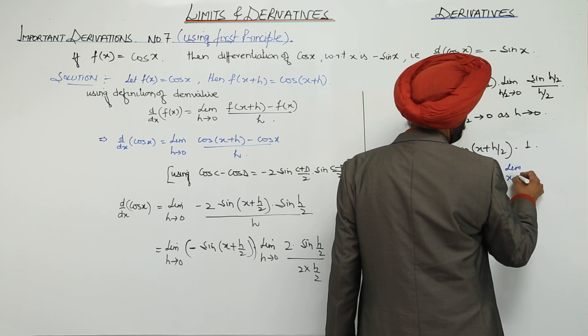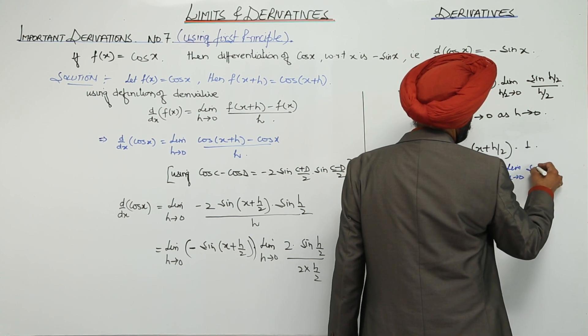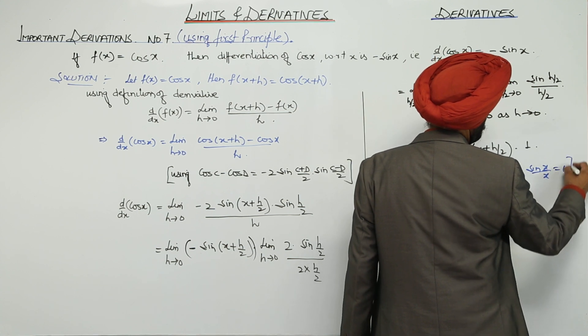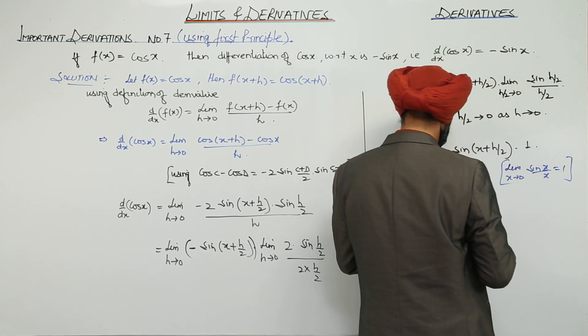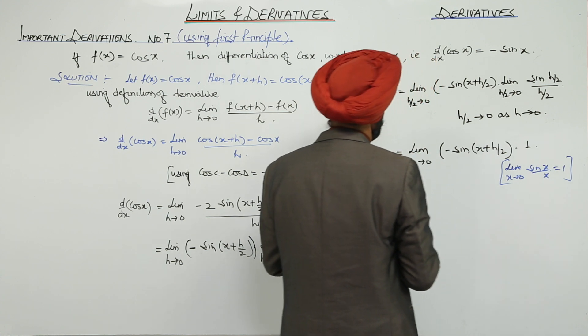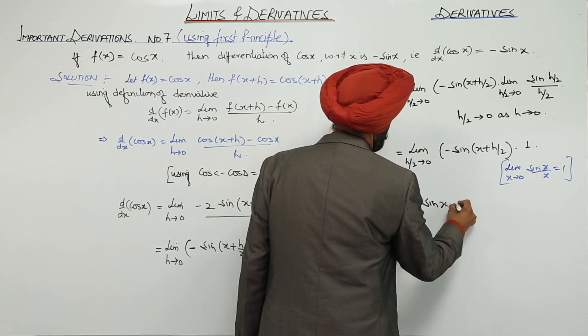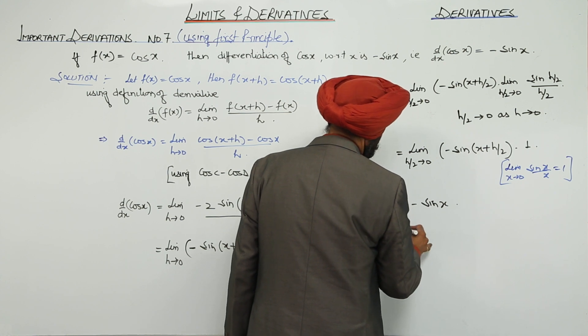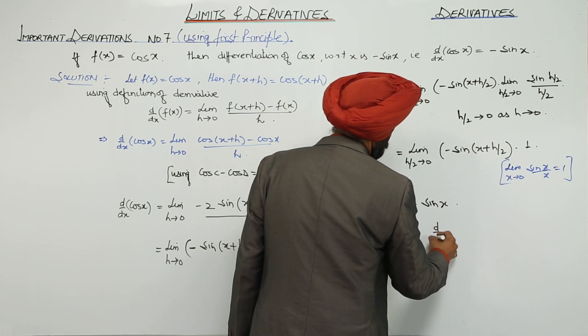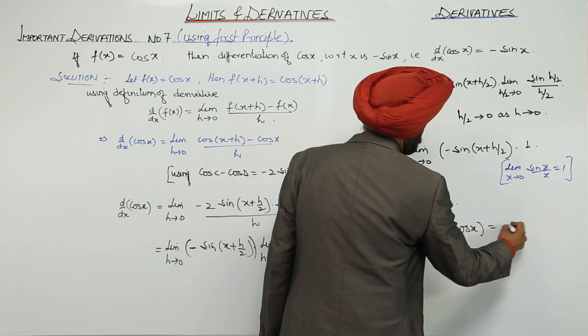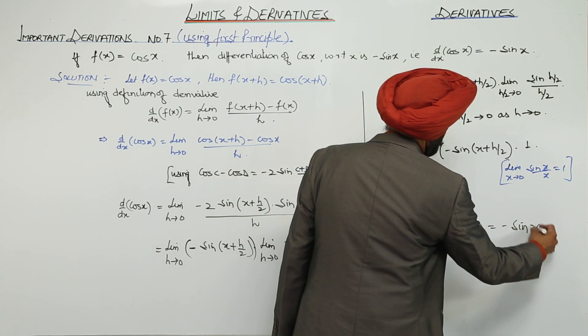Now, limit x approaches to 0, sin x upon x is equal to 1, negative of sin x.